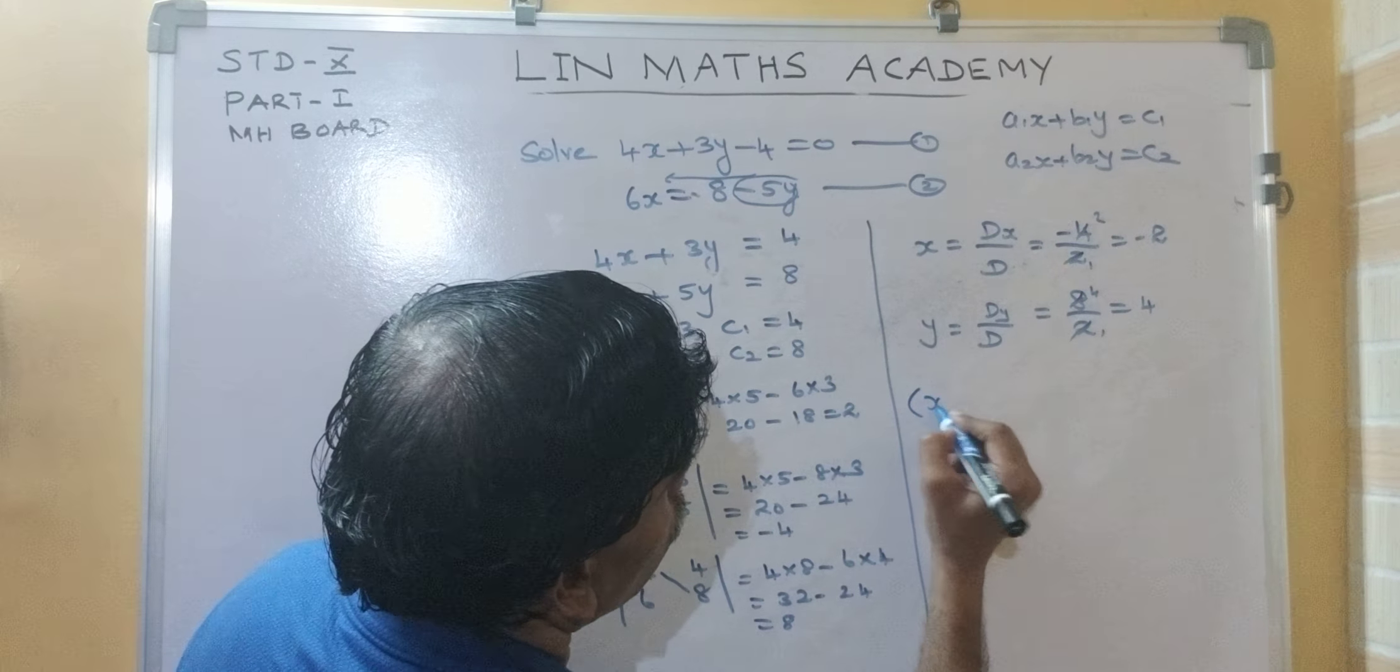dy upon d equal to 8 upon 2 equal to 4. So, solution is x comma y equal to minus 2 comma 4. Is it simple or not? Yes, really it is simple.